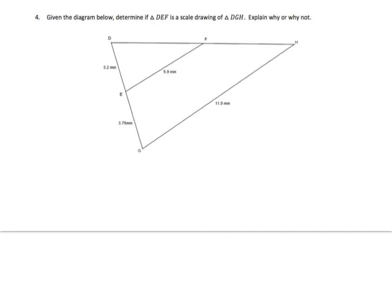Given the diagram below determine if triangle DEF is a scale drawing of triangle DGH, explain why or why not. So let's go ahead and check some of these ratios. If you remember DG over DE should give us a ratio. So I have 3.75 plus 3.2 over 3.2. What's that give us? I already did the math. Where's my work? All of my work is upside down because if you read the problem reading the problem is very important.